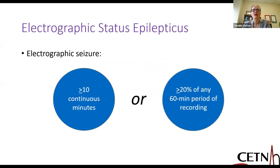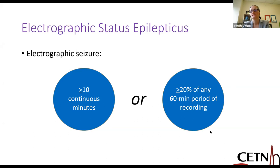If we think about electrographic status epilepticus, there may be no visible convulsions clinically, but there can still be ongoing electrographic seizure. Based on the ACNS terminology for continuous EEG, these can be defined as electrographic seizures lasting greater than 10 minutes continuously, or with a seizure burden of greater than 20% of any 60-minute period of recording — because there's evidence that above a 20% seizure burden per 60 minutes is associated with less good outcomes.